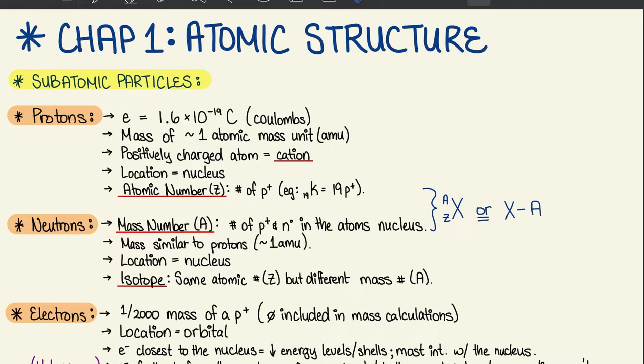So in a passage, if they say the atomic number of element X is 19, you know in your head that's the number of protons. You're going to look at your periodic table and say, oh, that's potassium.